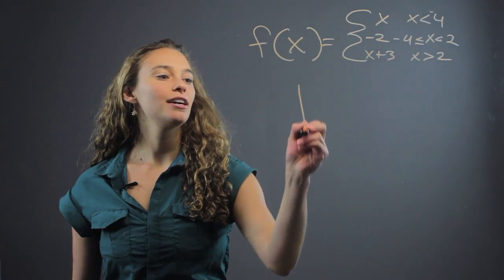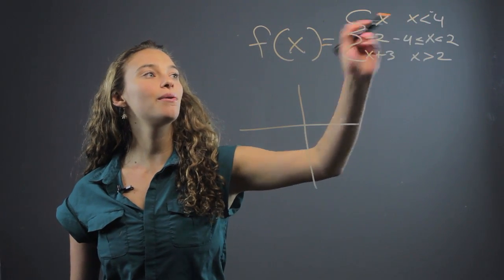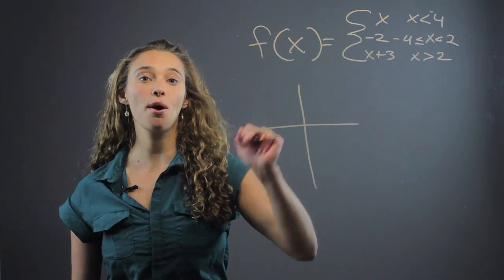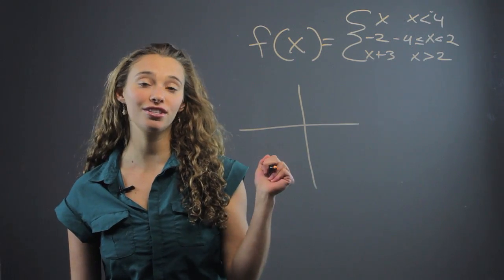So the important thing to remember is if it's less than or greater than, you have to have an open circle. If it's less than or equal to, or greater than or equal to, you have to have a closed circle.